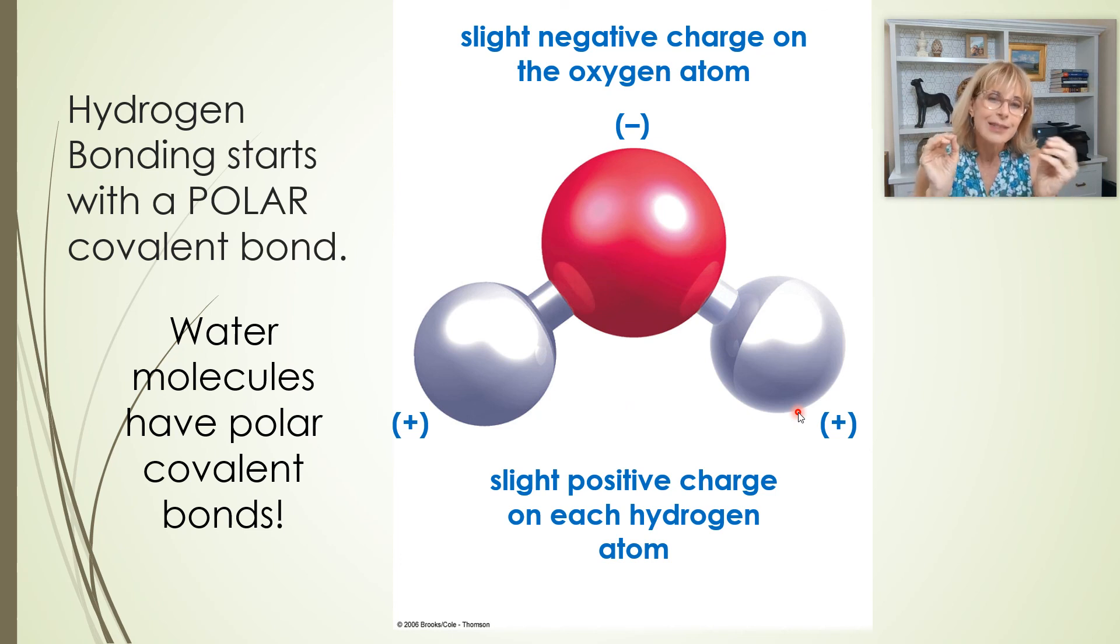And each hydrogen is slightly positively charged. So because of the polar covalent bond, even though an individual water molecule has no charge, an individual water molecule has the same number of electrons and protons. So the water molecule itself has no charge, but the distribution of charge is uneven, and that creates parts of the water molecule that are slightly negative and parts of a water molecule that are slightly positive. So right now, we're not looking at a hydrogen bond yet. This is not a hydrogen bond. This is a water molecule that has polar covalent bonds.